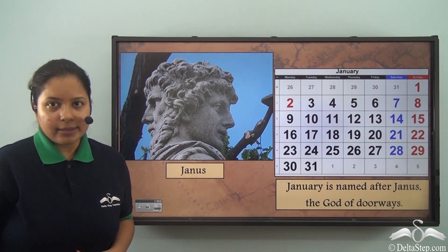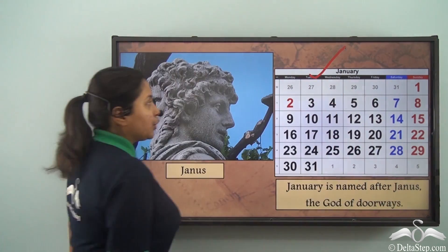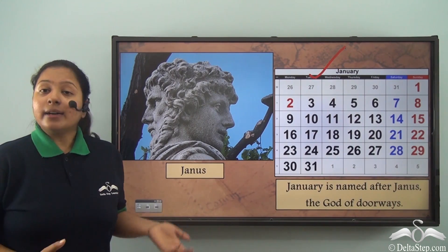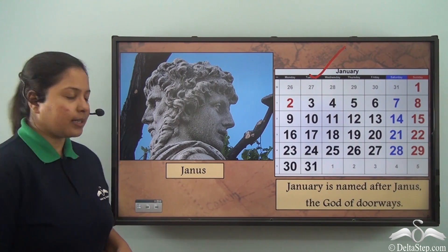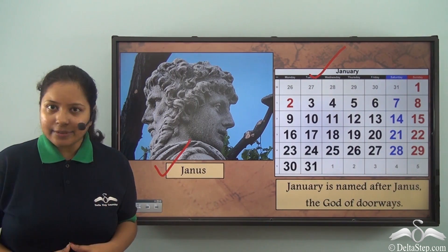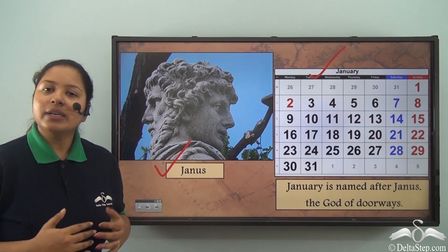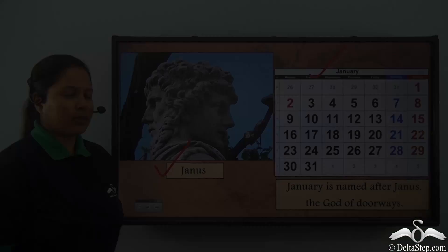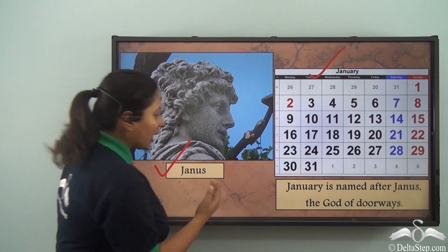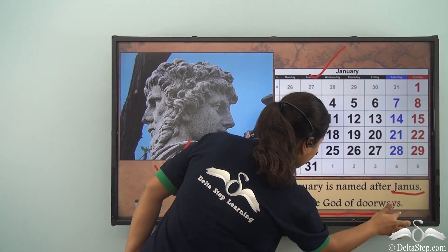The first month is January. Do you know why it was named January? Because during early days there was a God named Janus, and the people believed that Janus is the God of Doorways and New Starting. So they named the first month of the calendar January after Janus, the God of Doorways.